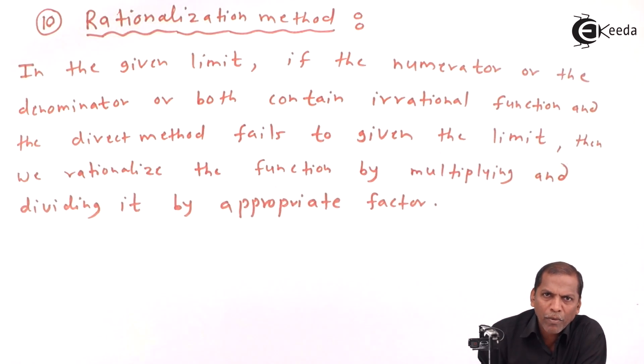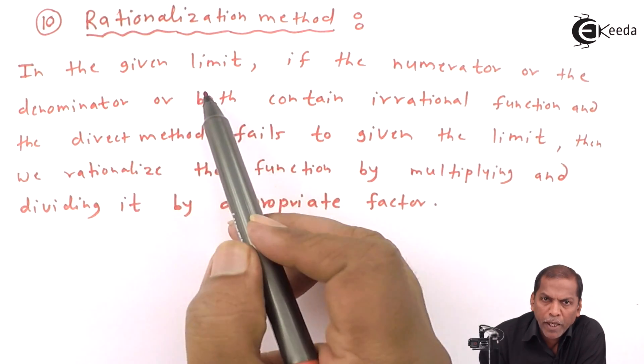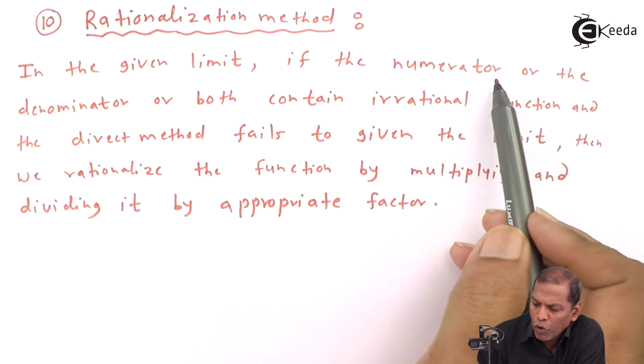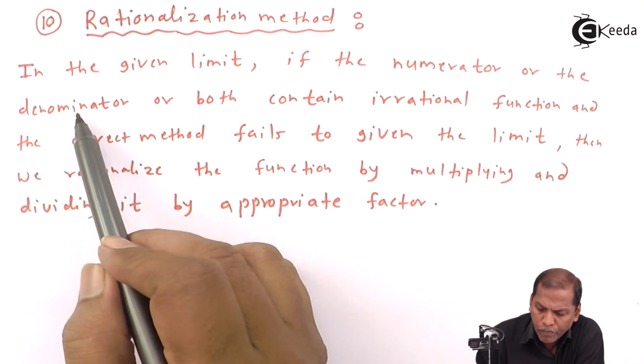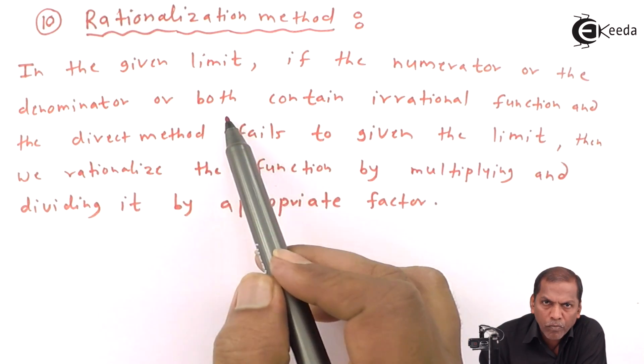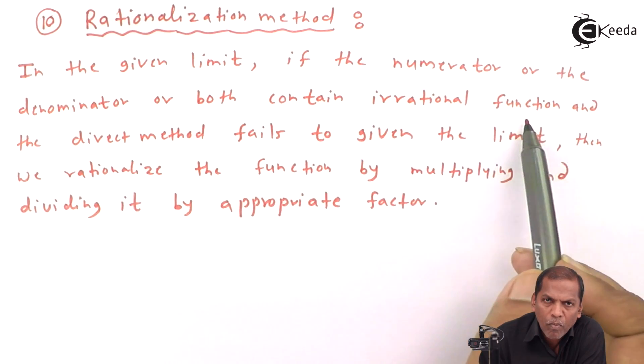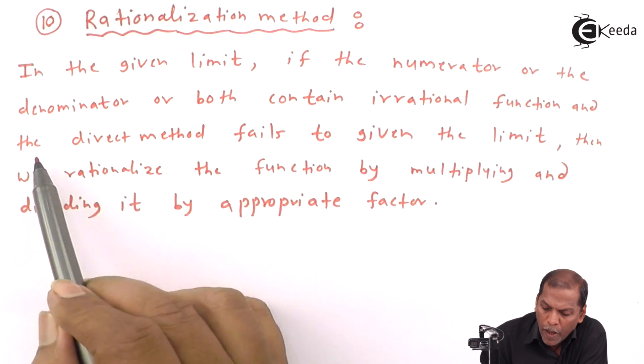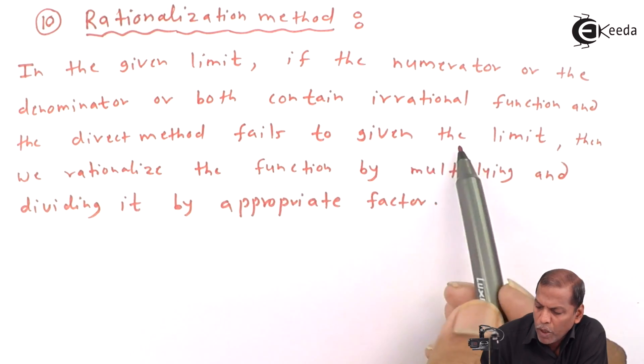So in rationalization method, in the given limit, if the numerator or the denominator or both contain irrational function and the direct method fails to give the limit,